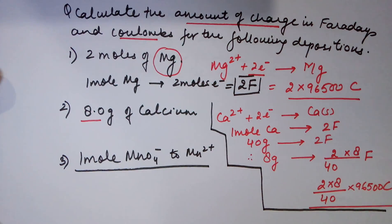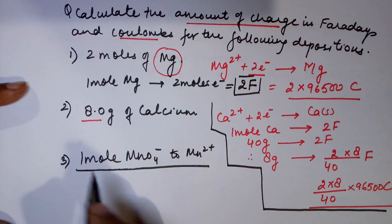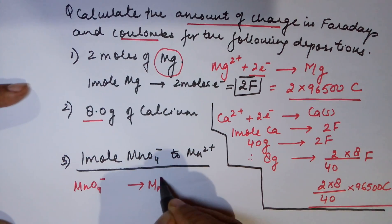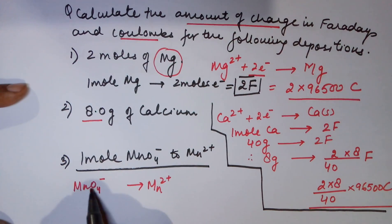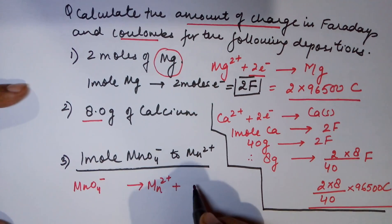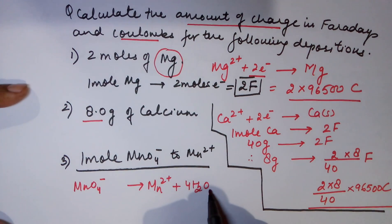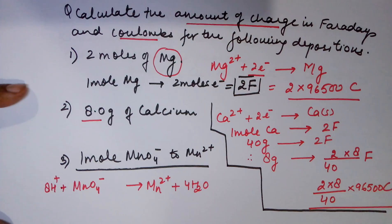1 mole of MnO4^- has to transform into Mn^2+. We need the equation. MnO4^- goes to Mn^2+. Let's balance this first. We balance the oxygen atoms. For 4 oxygen atoms, you require 4 water molecules. While you put 4 molecules of water, you also get 8 hydrogens which are to be balanced by 8 H+.